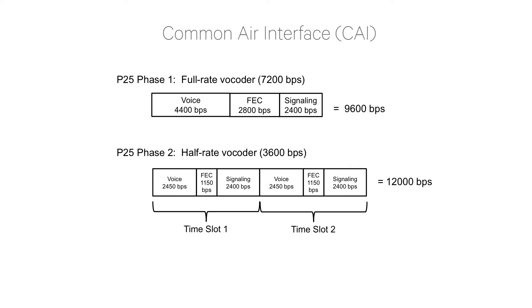The Common Air Interface, or CAI, defines the radio frequency interface used by portables, mobiles, and repeaters. This allows radio equipment from different manufacturers to work together. The CAI is used on both conventional and trunked radio systems.